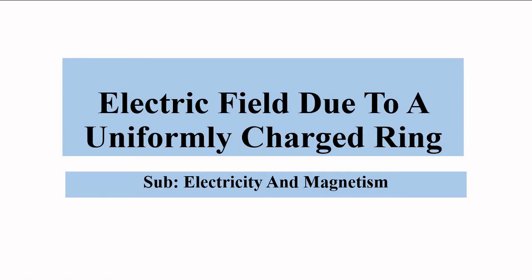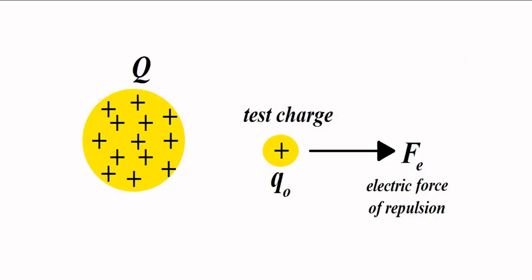Hello friends, welcome to Engineering Tutorial. We will continue our discussion with electricity and magnetism. In the previous video we discussed about the electric field due to a group of point charges — first for a single point charge, then extended to a group of point charges. In this video we are going to discuss about the electric field due to a uniformly charged ring. We have already discussed the basic idea: electric field due to any source, be it a single point charge or a group of point charges, we have to find it at any point P.